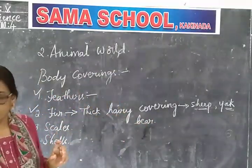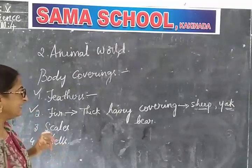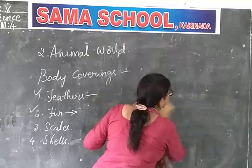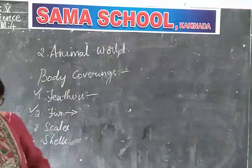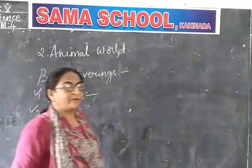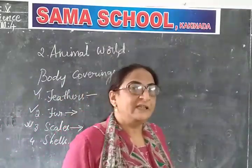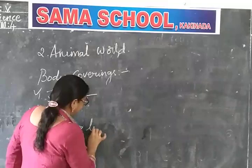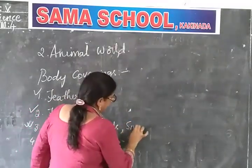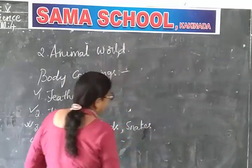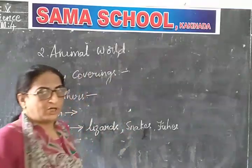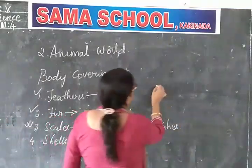Now let us learn about scales. Scales are another body covering. These scales are found on the bodies of lizards, snakes, and fishes. They have scales on their bodies. Scales on fishes have been overlapped on one another.